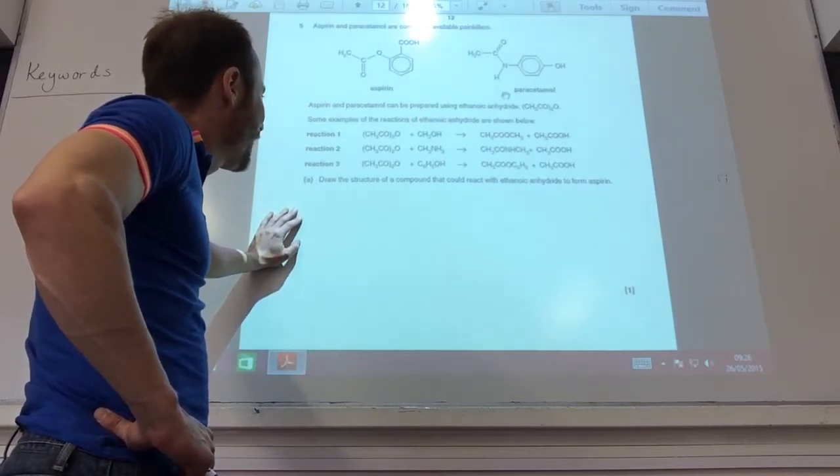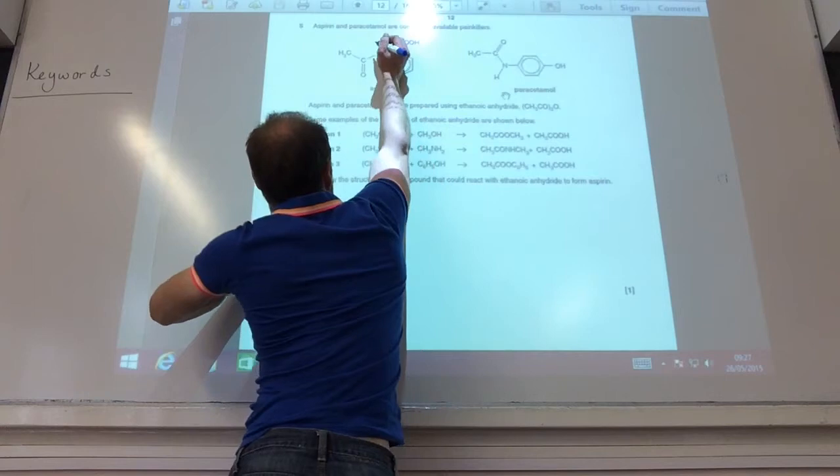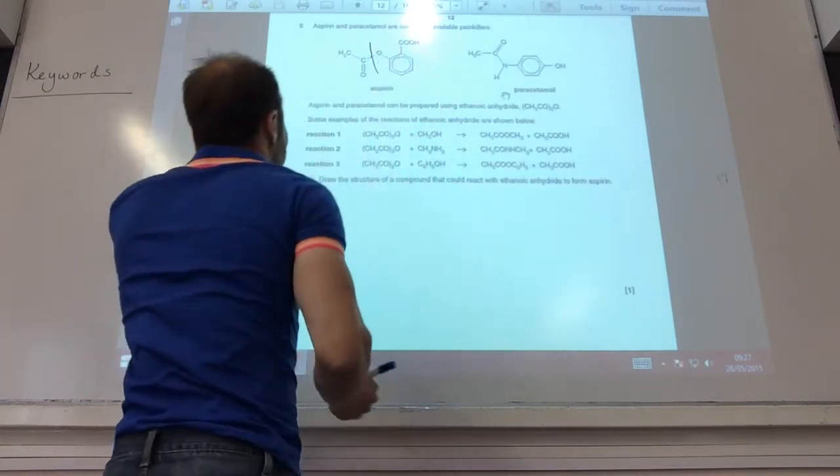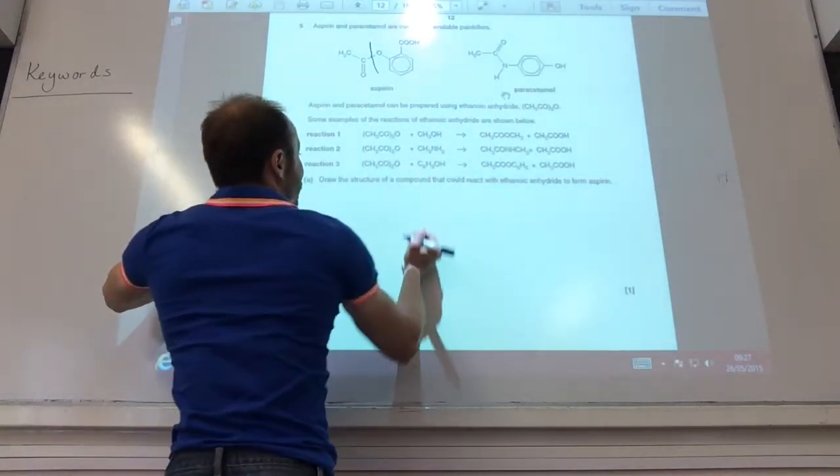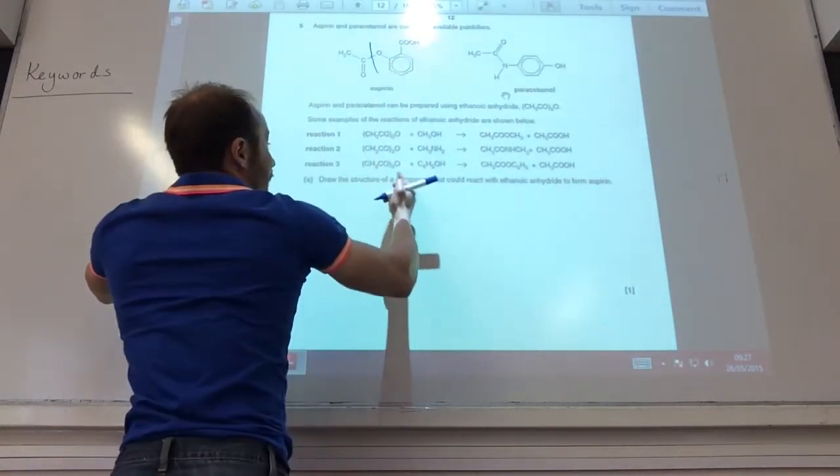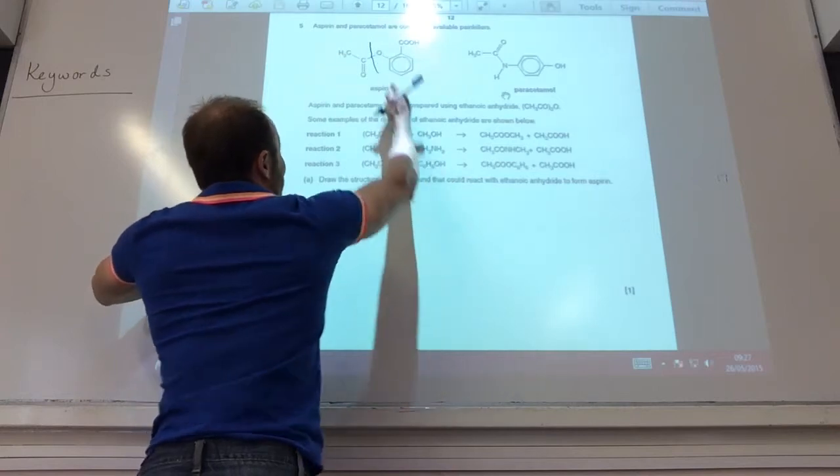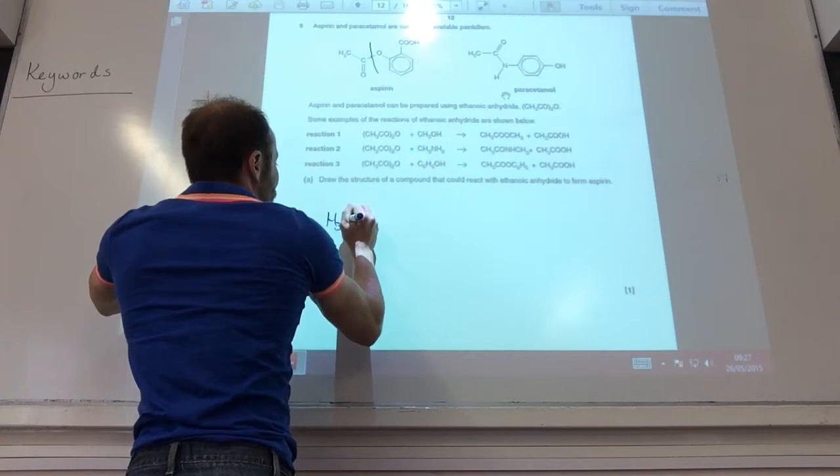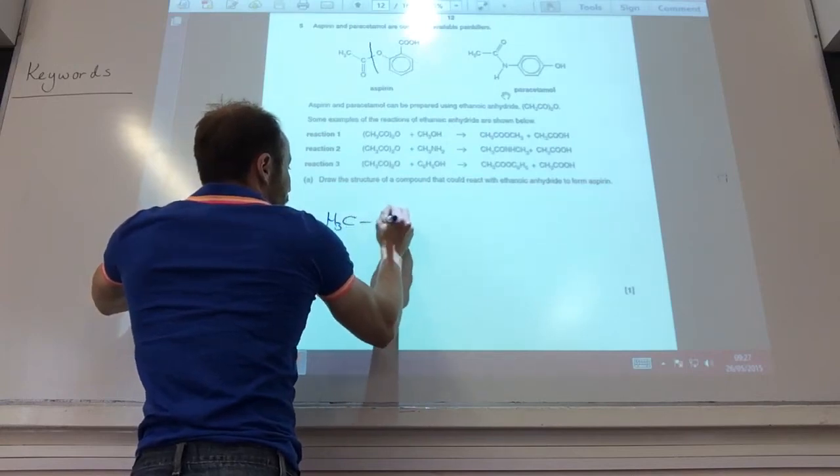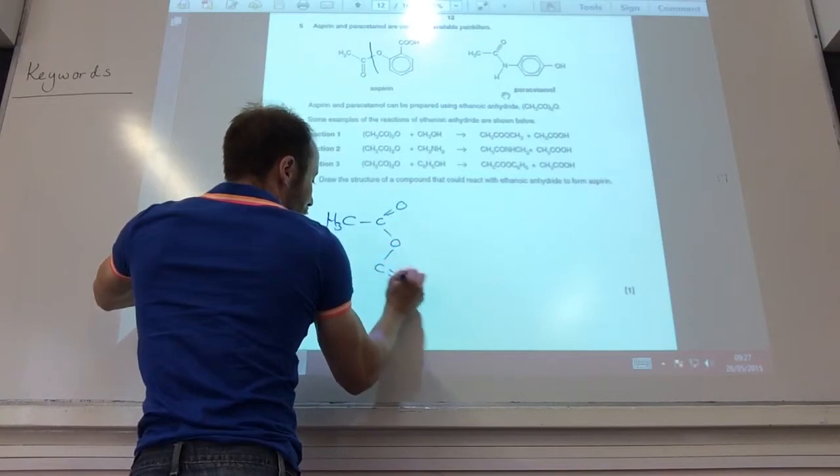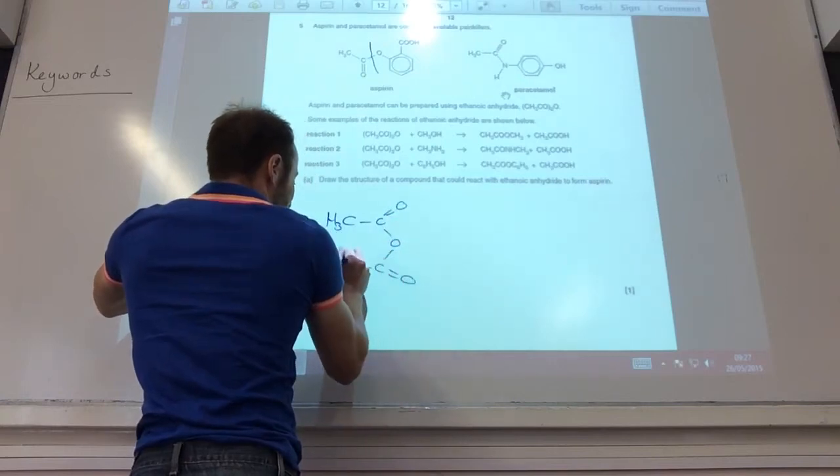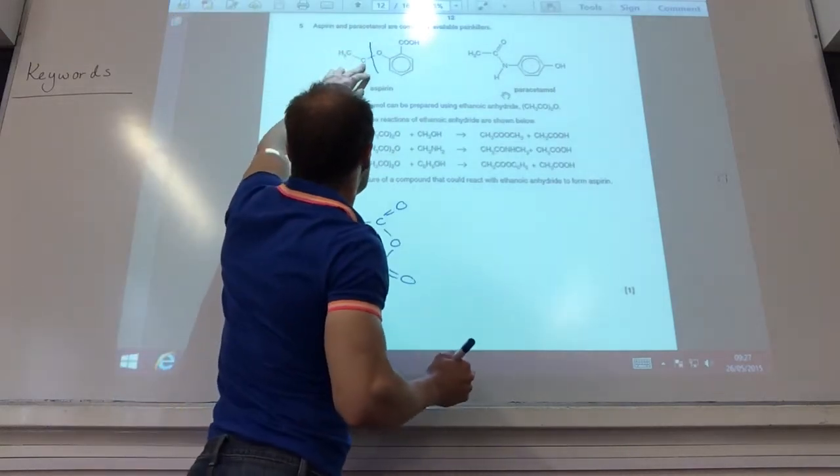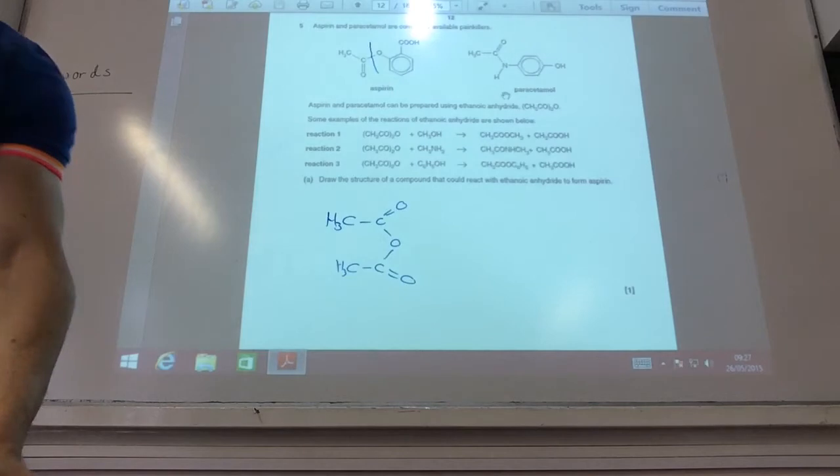Draw the structure of the compound of the ethanoanhydride as formed aspirin. So, hopefully you can see that's your ester group there, isn't it? So you're going to break it there. So that's going to be the phenol group there. And hydride is going to be that one there. So you need just one arm group coming up there.